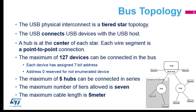About the tiered star topology: you have a center — a hub — and everything connected around it. You have one host for the entire network, and inside the host there is a root hub. You can have devices connected to the root hub, plus special hub devices, and around each hub you can have many more devices. Maximum number of devices is 127.